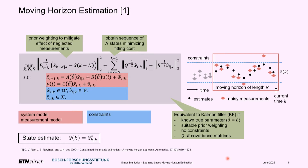The issue is that we require knowledge of the true parameter in our system model. One option is to optimize simultaneously over state estimates and parameters, but this leads to a non-convex optimization problem due to bilinearities in the system dynamics. Instead, we turn to an online tuning algorithm.